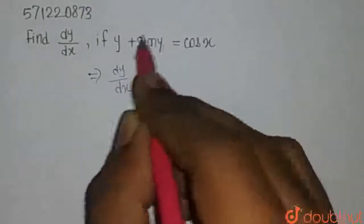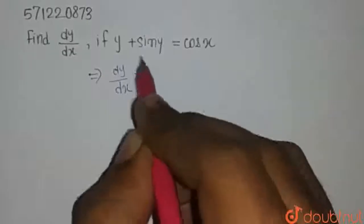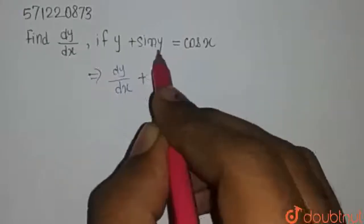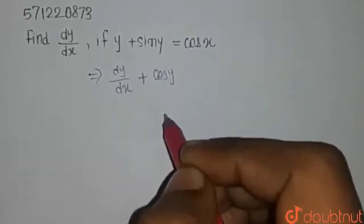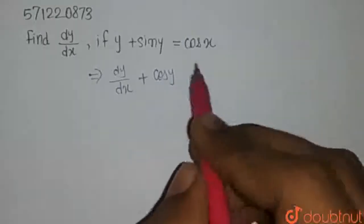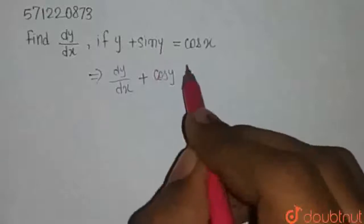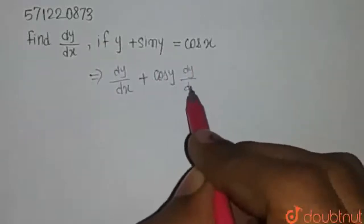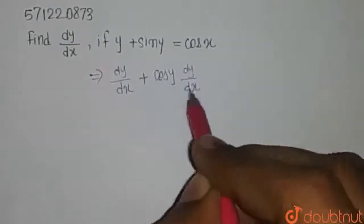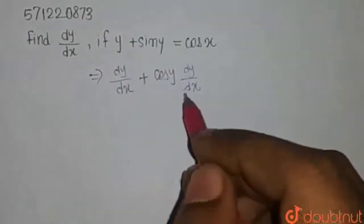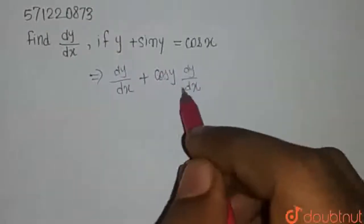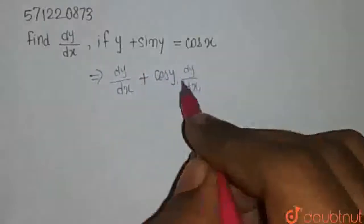And again sin y. First of all, we need to differentiate sin y which equals cos y. It is the basic differentiation that we know and then differentiation of y which is dy by dx with respect to x. So here it is. One side is completed.